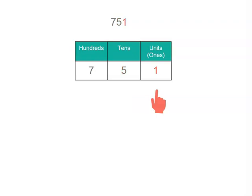So now we can write our number as the sum of its parts. 7 hundred plus 5 tens, or 50, plus 1. And now we've got 3 different parts of a number. So we could work on the different parts if we needed to.